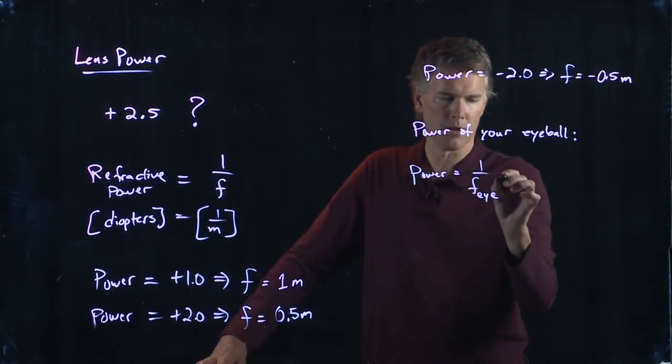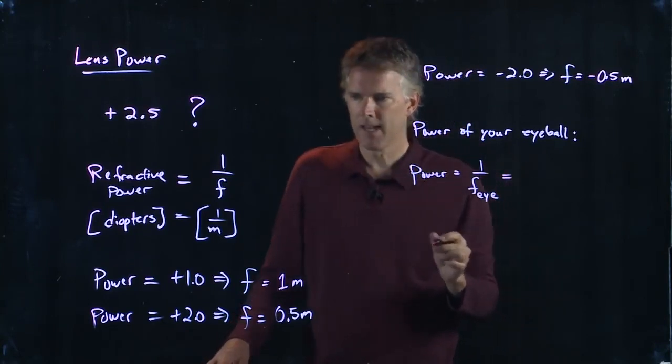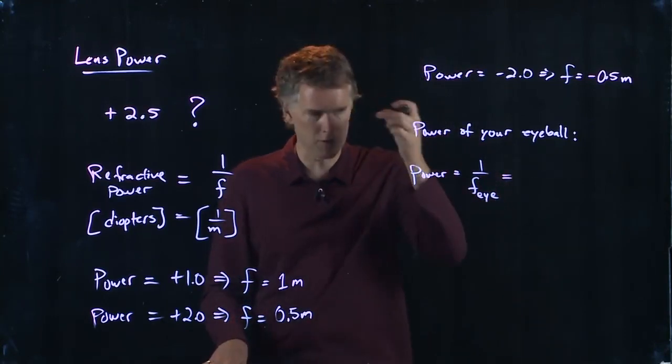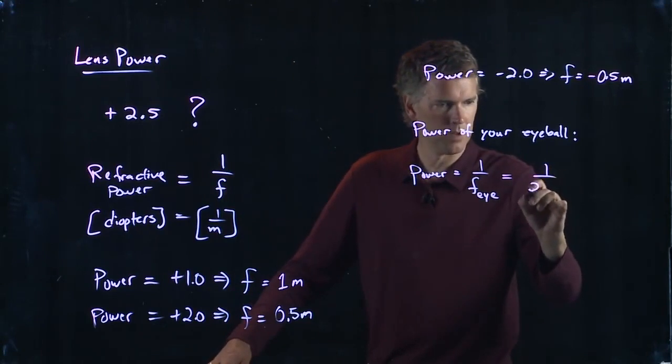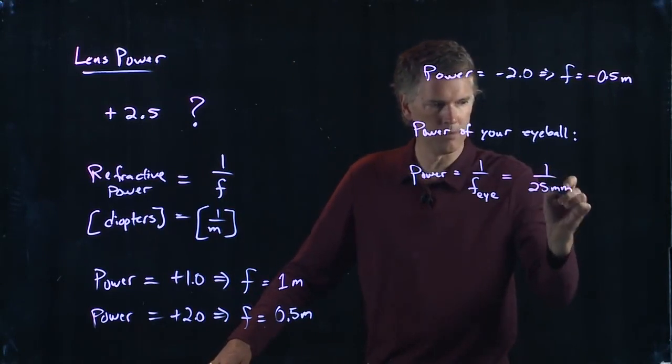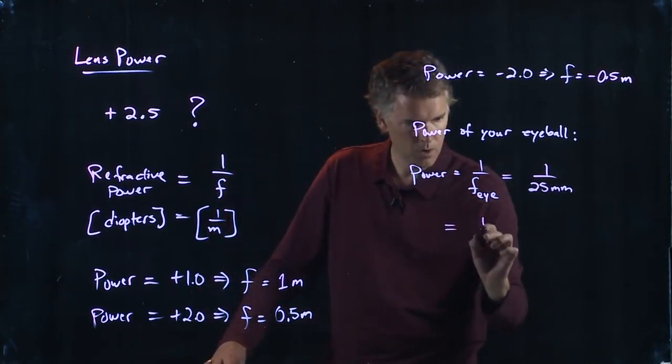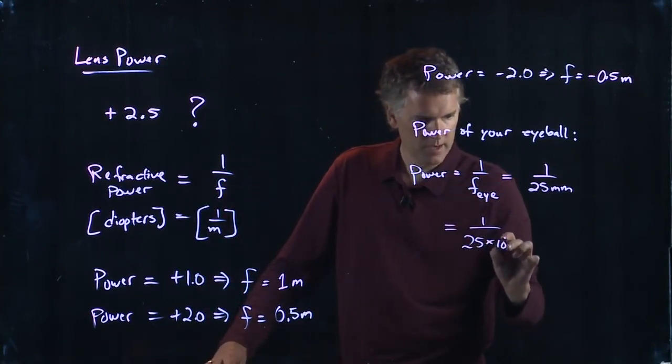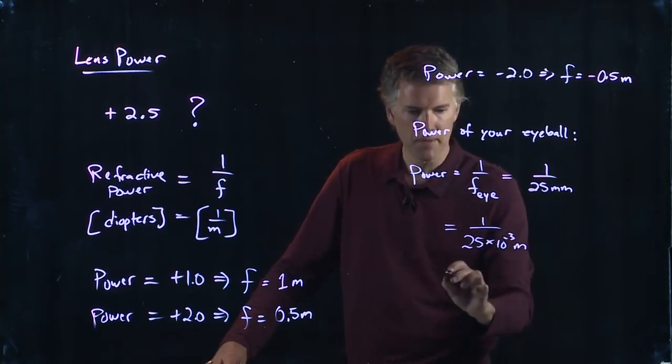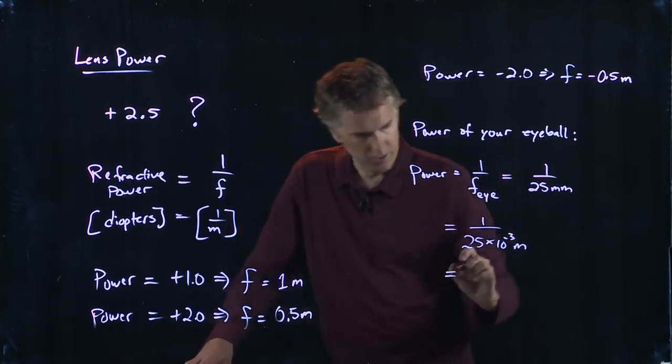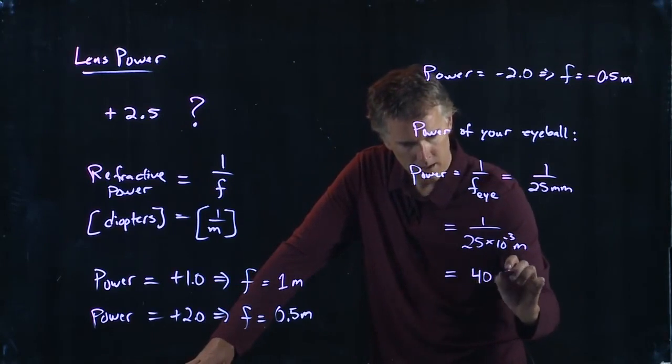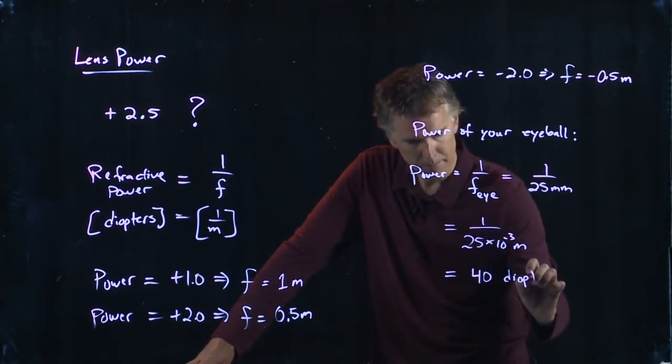We talked about the focal length of your eye last time. It has to be basically the size of your eye, which is about 25 millimeters. So this is 1 over 25 times 10 to the minus 3 meters, which is 40 diopters.